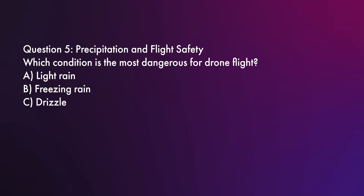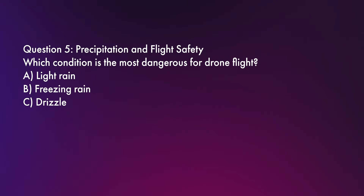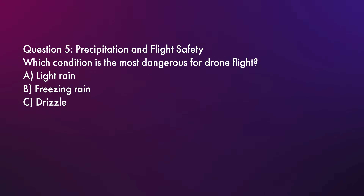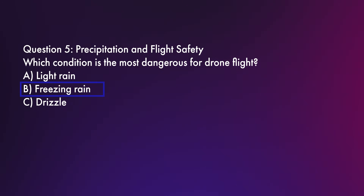Question five: Which condition is the most dangerous for drone flight? Is it A, light rain; B, freezing rain; or C, drizzle? Light rain and drizzle seem like the same thing, so there's really only one that sticks out: freezing rain. Freezing rain coats the surfaces of your drone with ice, which can affect the drone sensors, the propellers, and the overall stability of the drone.